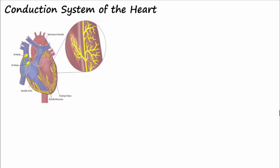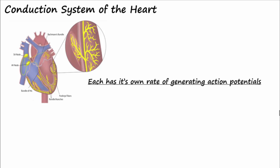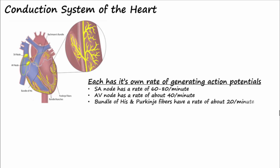Even though the SA node is the pacemaker, the other components of the conducting system are also capable of spontaneously generating action potentials, each with its own intrinsic rate. The SA node has a rate of 60 to 80 per minute, the AV node a rate of about 40 per minute, and the bundle of His and Purkinje fibers generate at a rate of about 20 per minute. The SA node is the pacemaker simply because it has the fastest rate and reaches threshold before the other areas. If the SA node becomes damaged or stops functioning, the AV node can take over and the heart will continue to beat, just at a slower rate.